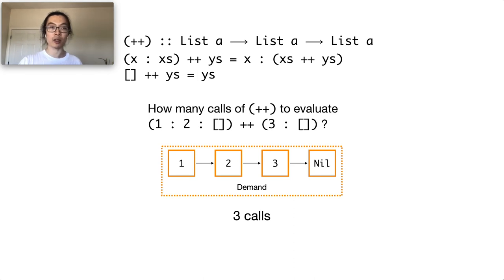In the case that only the first cell in the list is in demand, we only need to call the append function once. So the answer is B, 1 call.